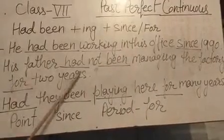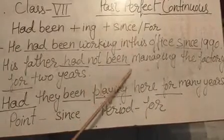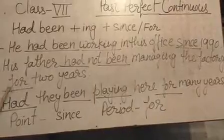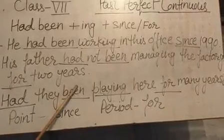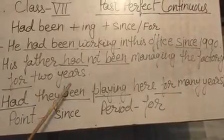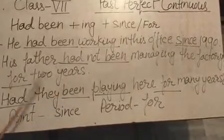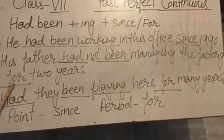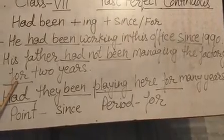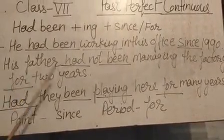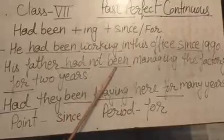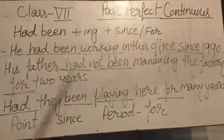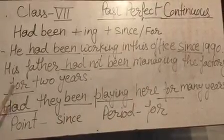Second example: His father had not been managing the factory for 2 years. Here the time is not sure, that is why it is called a period of time. For it, we use for — had been -ing and for.